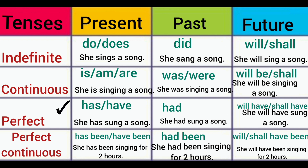Now it's time for perfect tense. Has and have are used for present perfect tense. She has sung a song — third form of verb is used. Has is used with singular subjects and have is used with plural subjects. For past perfect tense, had is the helping verb used with all subjects, and again the third form of the verb or past participle is used — she had sung a song.